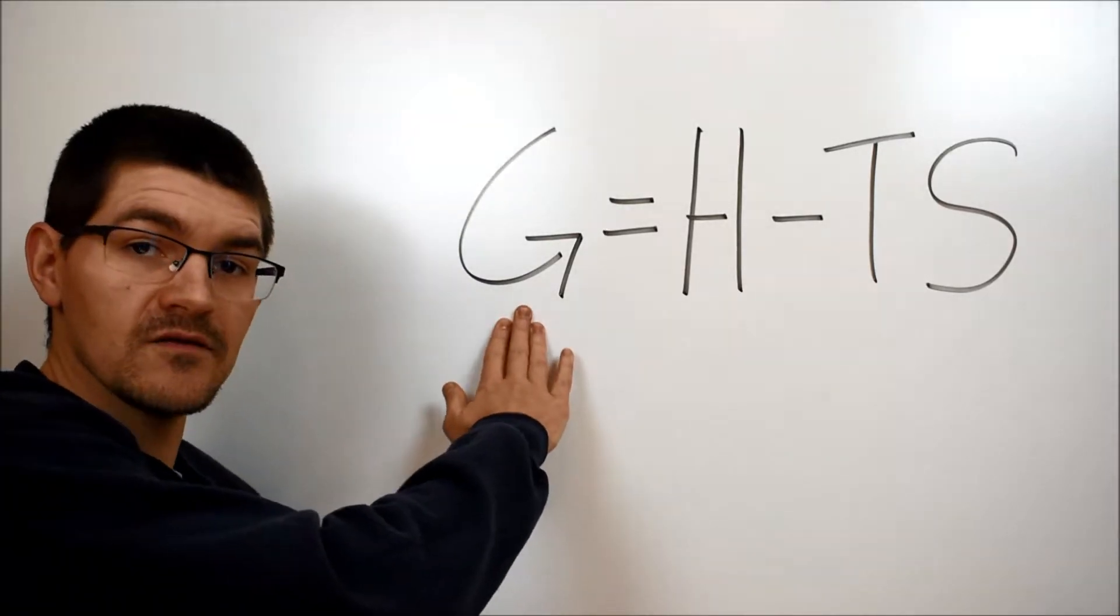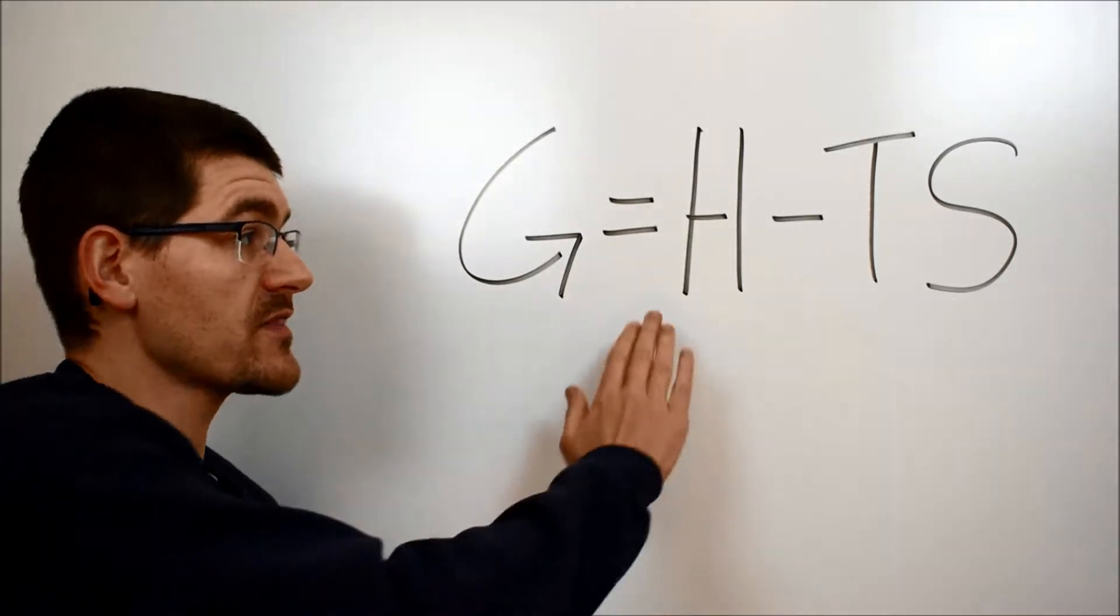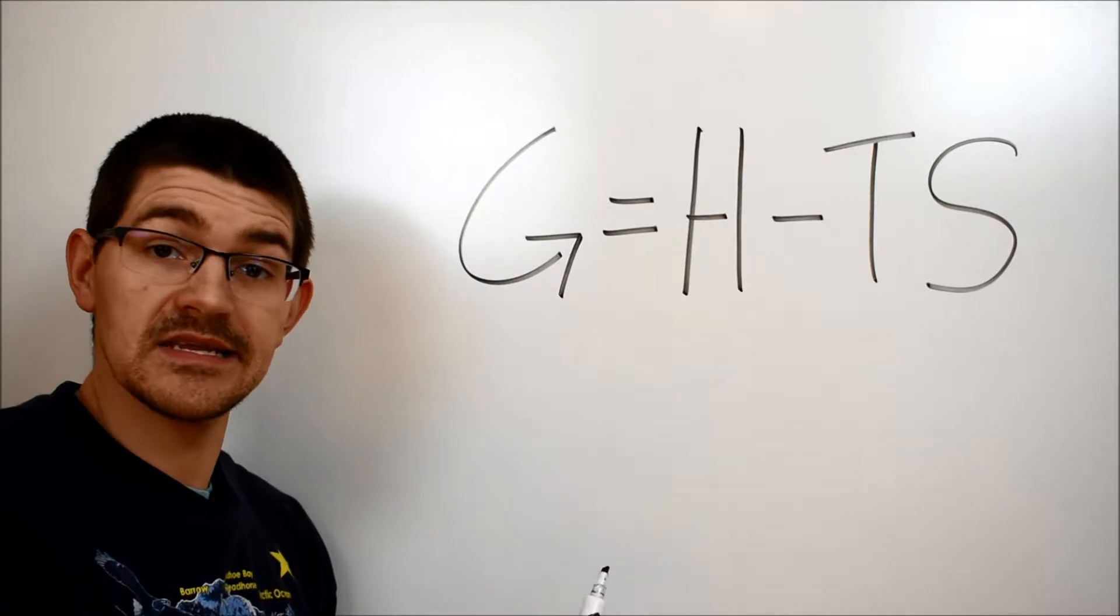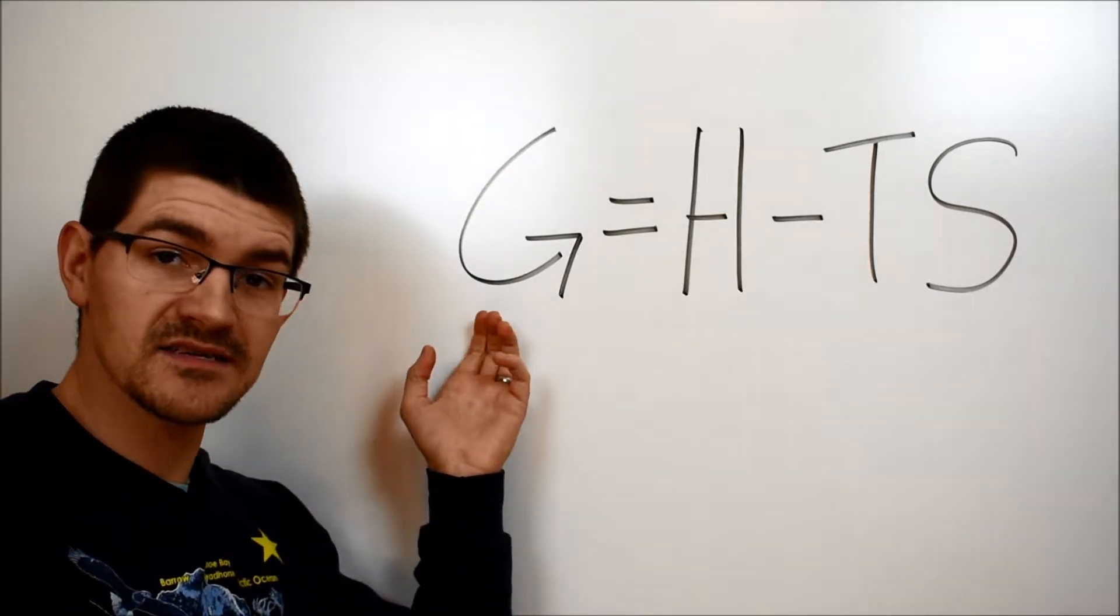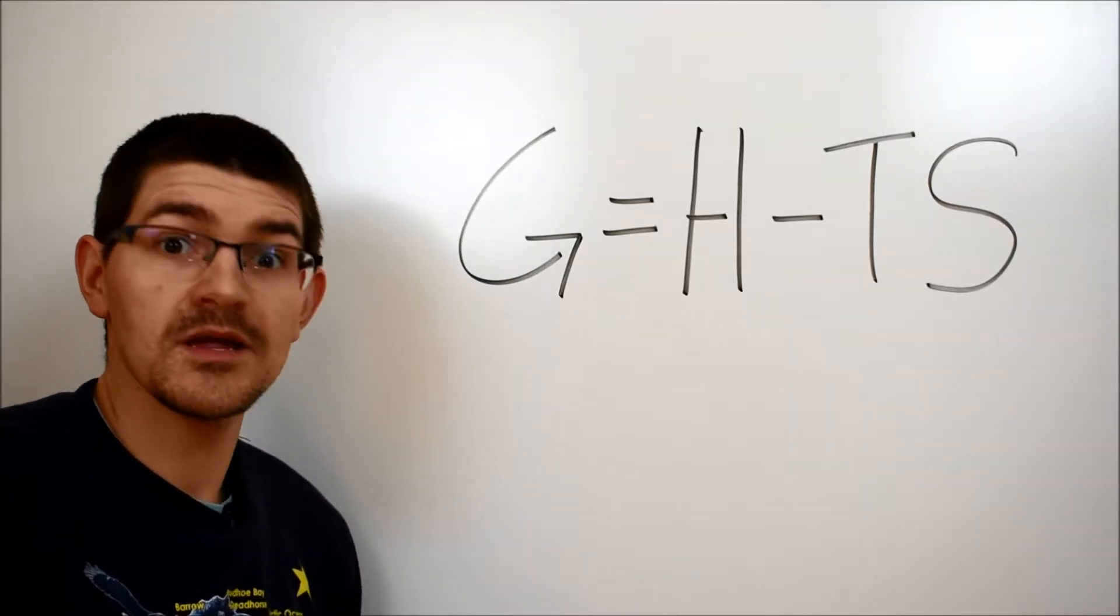When G is negative that means the process whatever that may be is spontaneous. So in those conditions if the number is negative it will happen all the time and doesn't need anything else to occur. On the flip side if the free energy is positive that means the process is non-spontaneous so there's nothing that can happen to make it go.